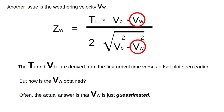Another issue is the weathering velocity. The intercept time and the base velocity are derived from the first arrival time versus offset plot seen earlier. But how is the weathering velocity obtained? Often, the actual answer is that the weathering velocity is just guesstimated.